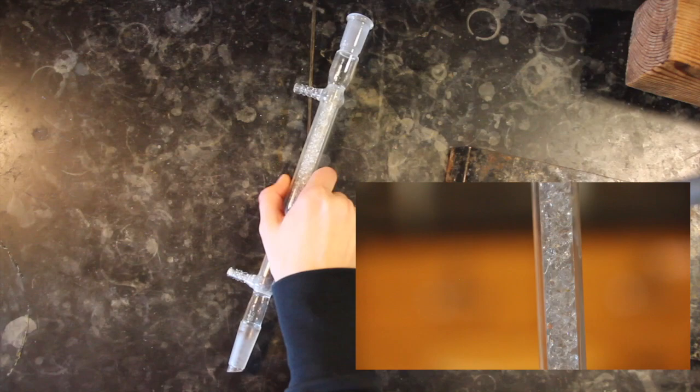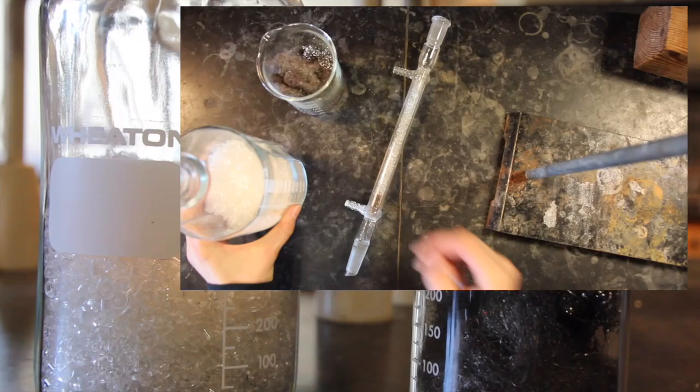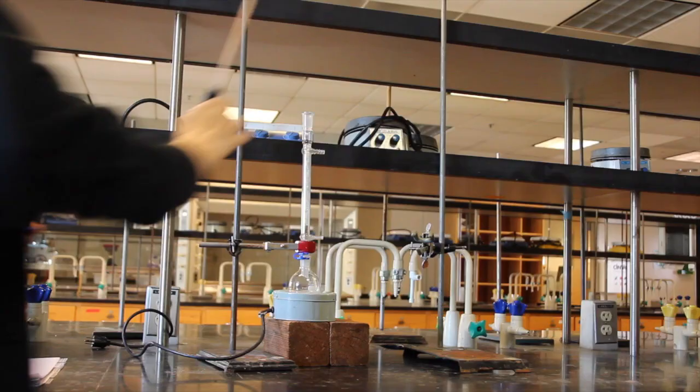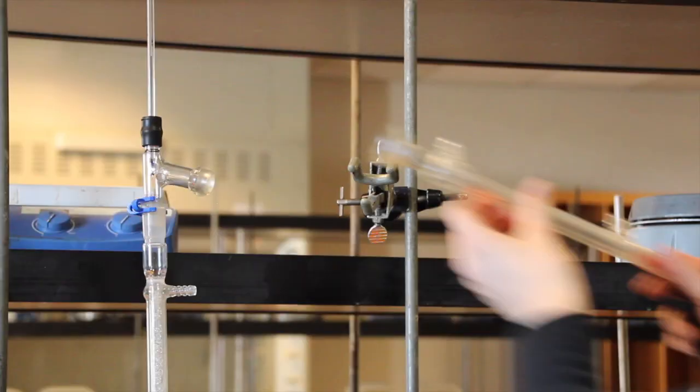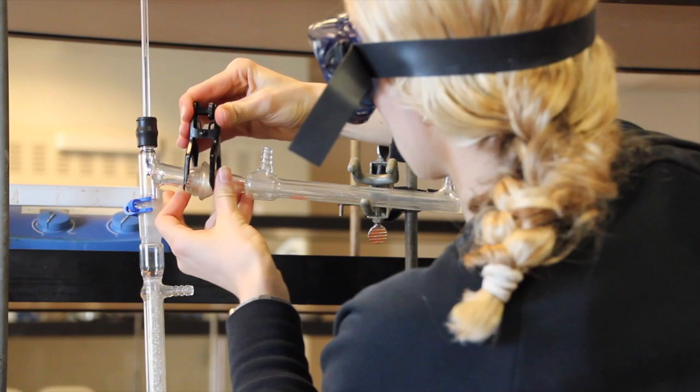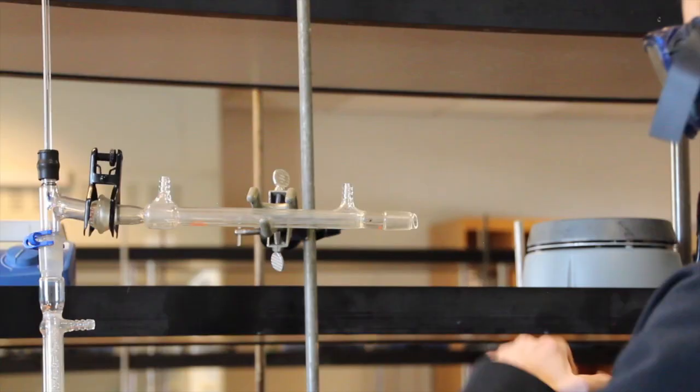Those setting up a fractional distillation apparatus should use glass helices to pack the fractioning column. To do so, gently place a small piece of steel sponge at the bottom of the column and then fill the column with these helices. When assembling your apparatus, use an additional clamp to securely support the fractioning column and the distillation head. This clamp should be placed near the top third of the fractioning column.